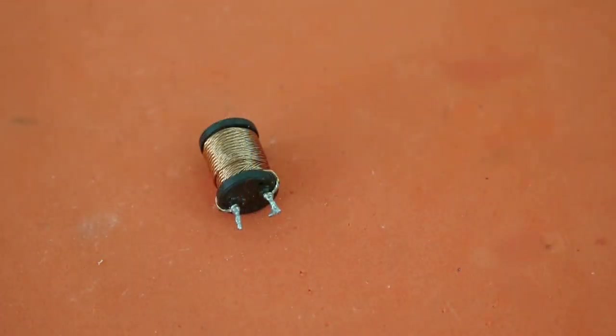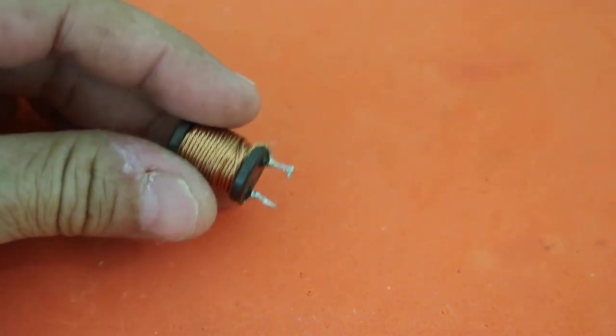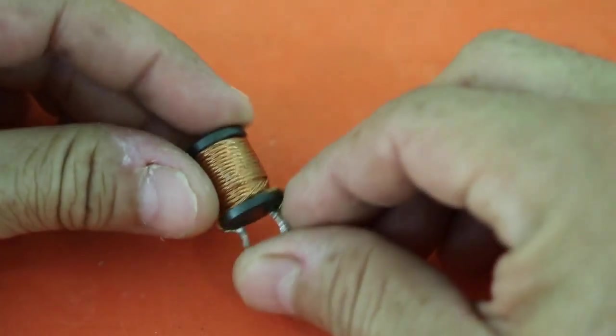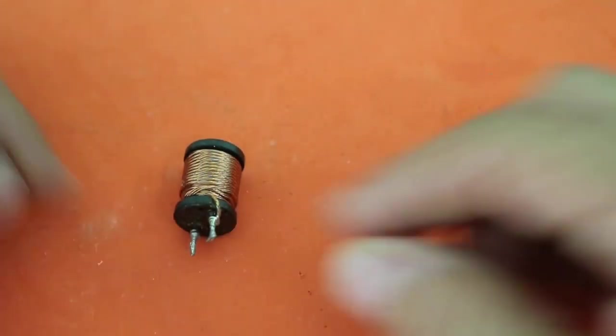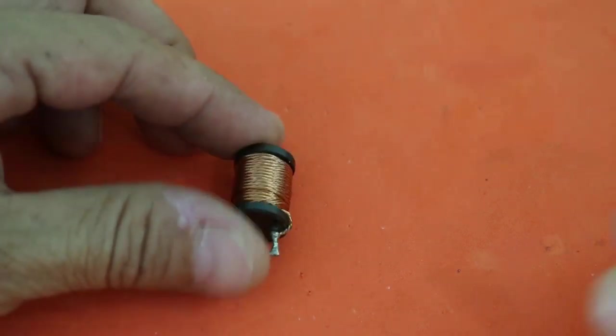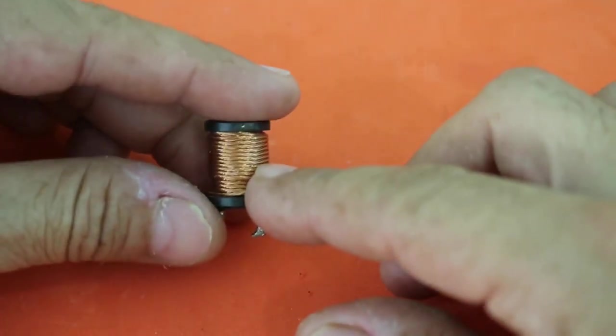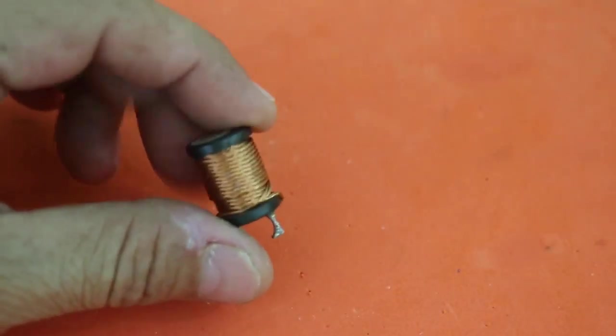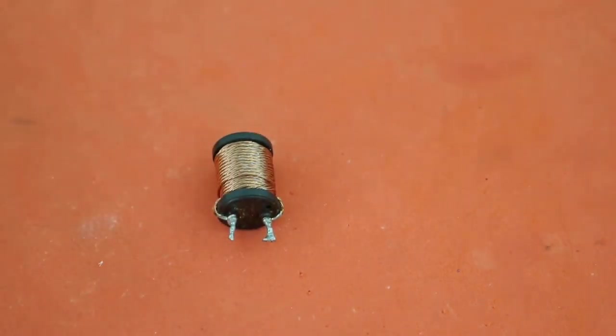The principle of the boost converter is very simple. It is based on an inductor. When we apply current to an inductor, a magnetic field surrounds the inductor. When we disconnect the current, the magnetic field collapses and induces a voltage on the inductor, which depending on the number of turns can be less or higher than the applied voltage.